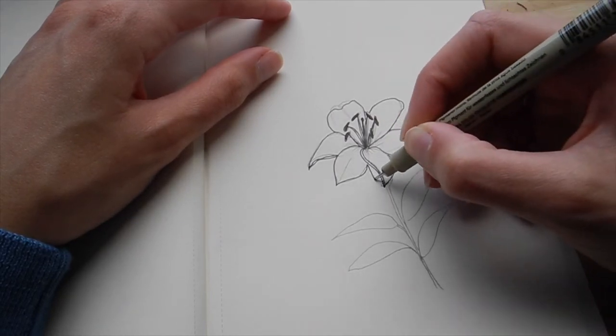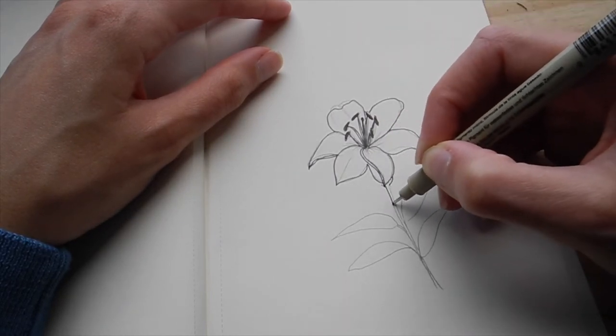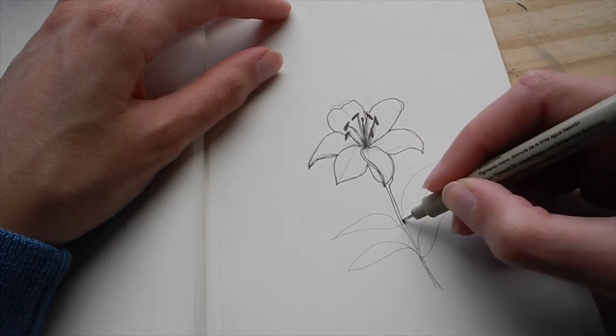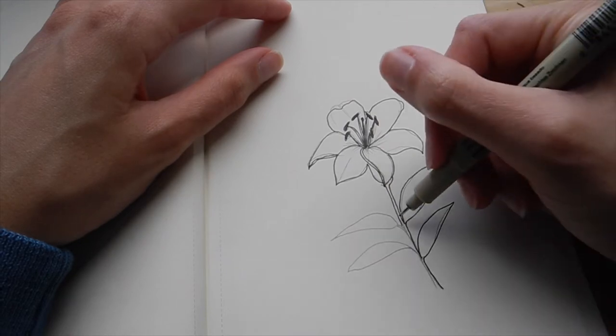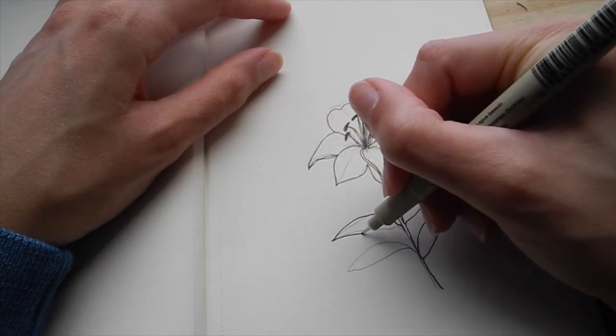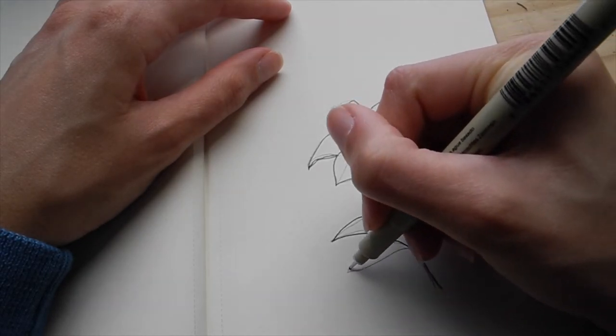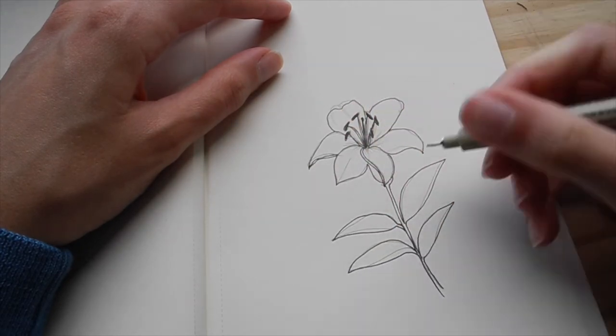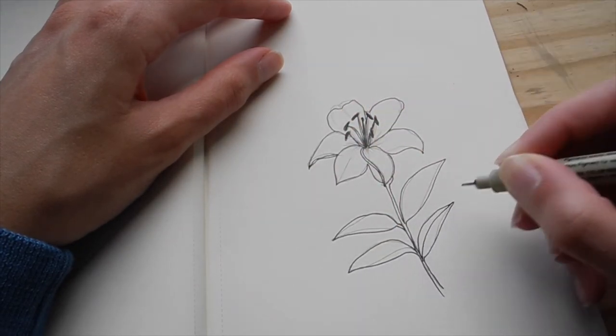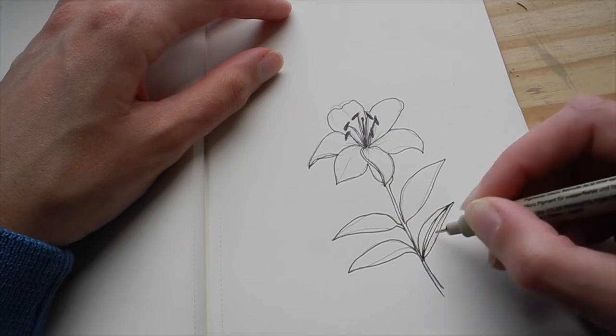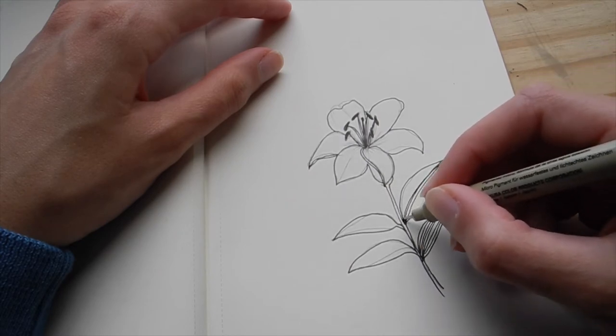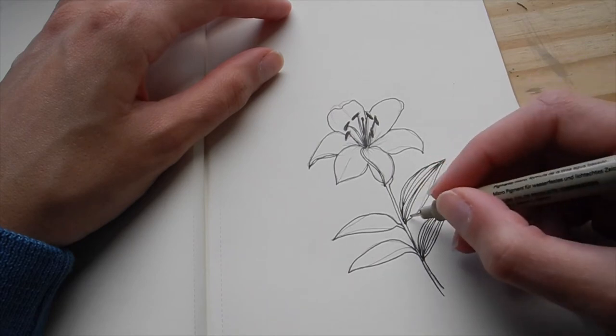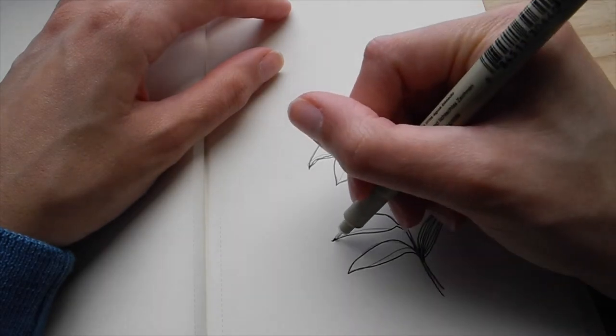And then I'm just going to go ahead and trace over the leaves and the stem. Now tiger lilies definitely grow in bunches, in like clusters, but I just thought I would break down how to draw just one today. And then the leaves, similar to the zinnias from last week, or two weeks ago, the leaves have those vertical lines like this. And I decided to fill those in before just because it's quick and easy. I don't have to think too much about it.